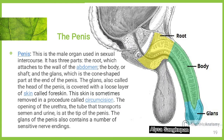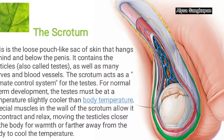Penis. This is the male organ used in sexual intercourse. The glans, also called the head of the penis — this skin is sometimes removed in a procedure called circumcision. The opening of the urethra, the tube that transfers semen and urine, is at the tip of the penis. The glans of the penis also contains a number of sensitive nerve endings.